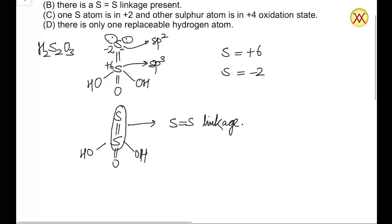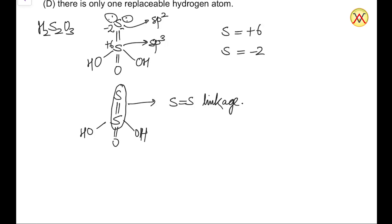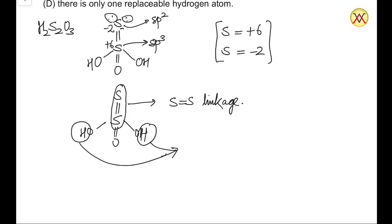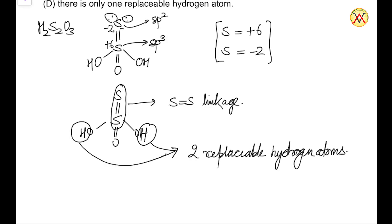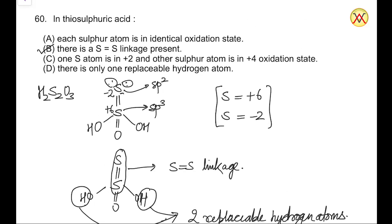Moving to Option C — one sulfur in +2 and the other in +4 oxidation state — we calculated the oxidation states to be +6 and −2, so Option C is also incorrect. For Option D, there are in fact two hydrogen atoms which can be released as H⁺, meaning there are two replaceable hydrogen atoms, not one. Therefore, Option D is incorrect, and the correct answer is Option B.